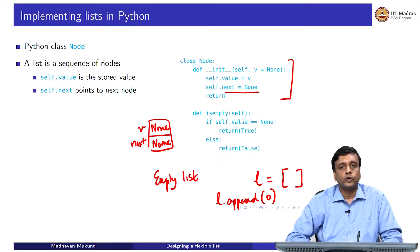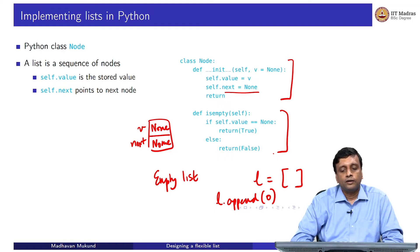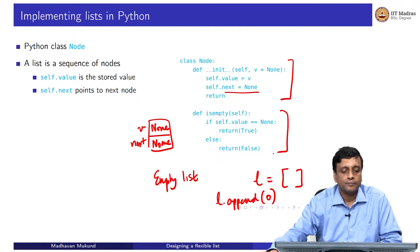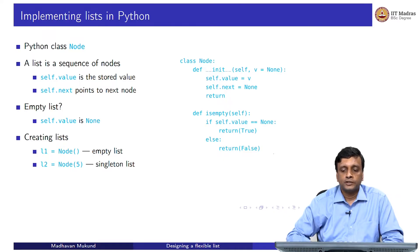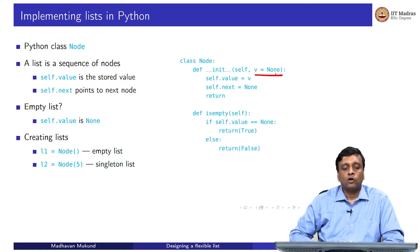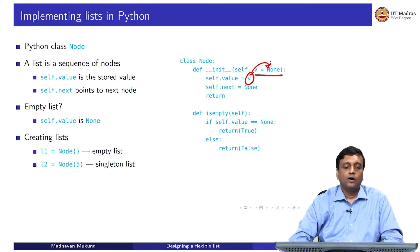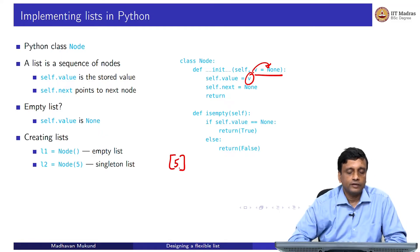The only situation in which a node has no value is when it is the first node of an empty list, and by definition there are no other nodes. This gives us the motivation for the isEmpty function: if the value is None, it is empty, return True; if the value is not None, return False. Implicitly, if the value is None the next must also be None. If we call node with no argument, we get an empty list — self.value defaults to None. If we call it with a concrete argument like 5, we get a node containing 5. So l1.isEmpty() returns True and l2.isEmpty() returns False.